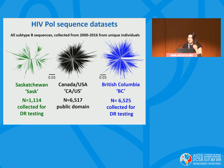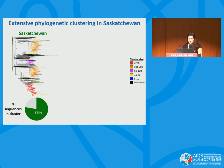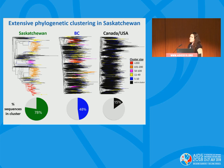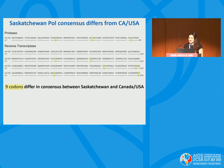Looking at phylogenetic trees of these sequence datasets, total tree height is relatively comparable between datasets, but tree topology differs markedly. The Saskatchewan epidemic, shown in green, is punctuated by sequence clusters — 78% of Saskatchewan sequences reside within a sequence cluster, compared to 48% from British Columbia and just 15% from the continental comparison dataset. The consensus pol sequence differs at nine sites between Saskatchewan and the rest of Canada and the US — striking because pol is a relatively conserved gene, and the amino acid at seven of these sites in Saskatchewan is a known HLA-associated immune escape mutation.